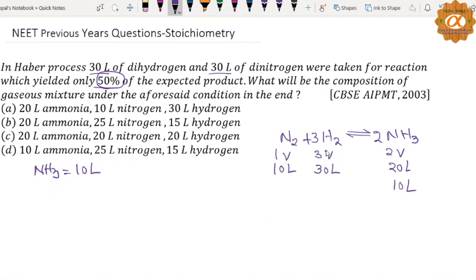That means 10 liters ammonia is formed, so half will be consumed. That means of the 30 liters, half will react - 15 liters of hydrogen will react and 15 liters will remain. Half of nitrogen will also react - 5 liters. But given was 30 liters initially, that means 25 liters of nitrogen will remain.